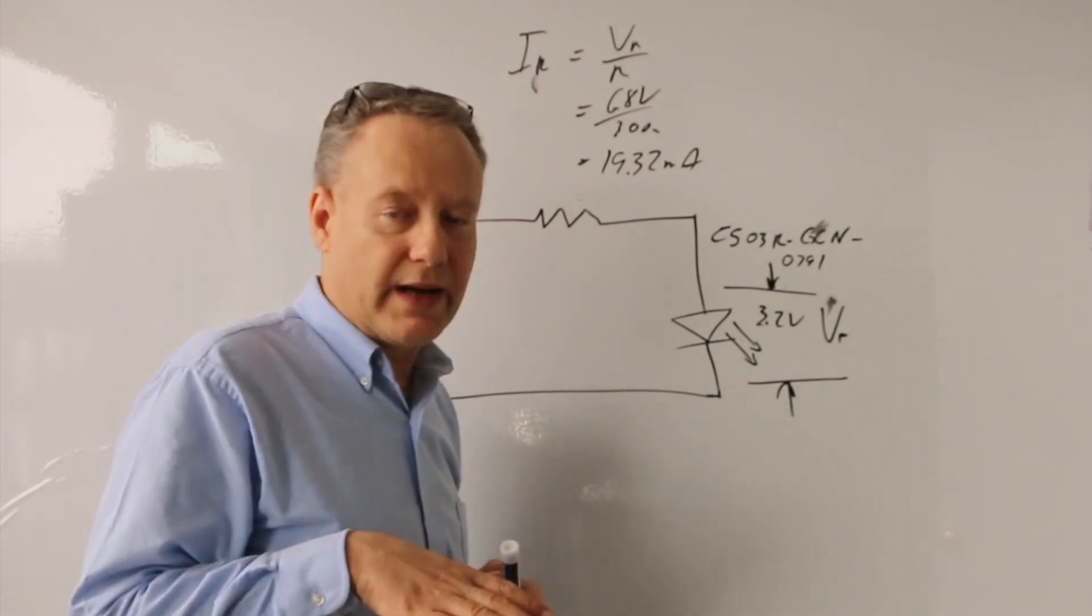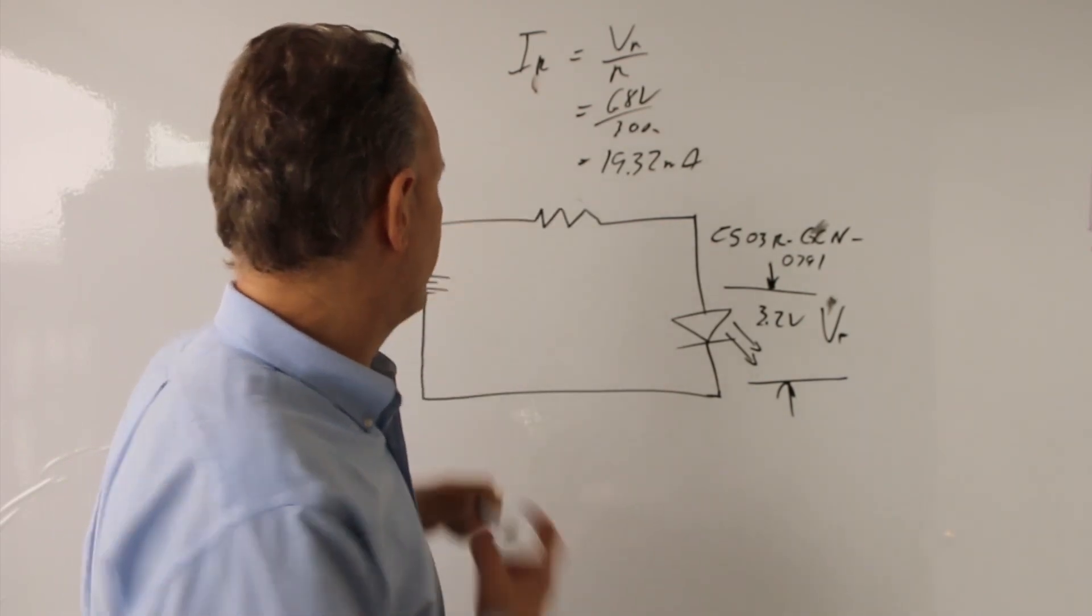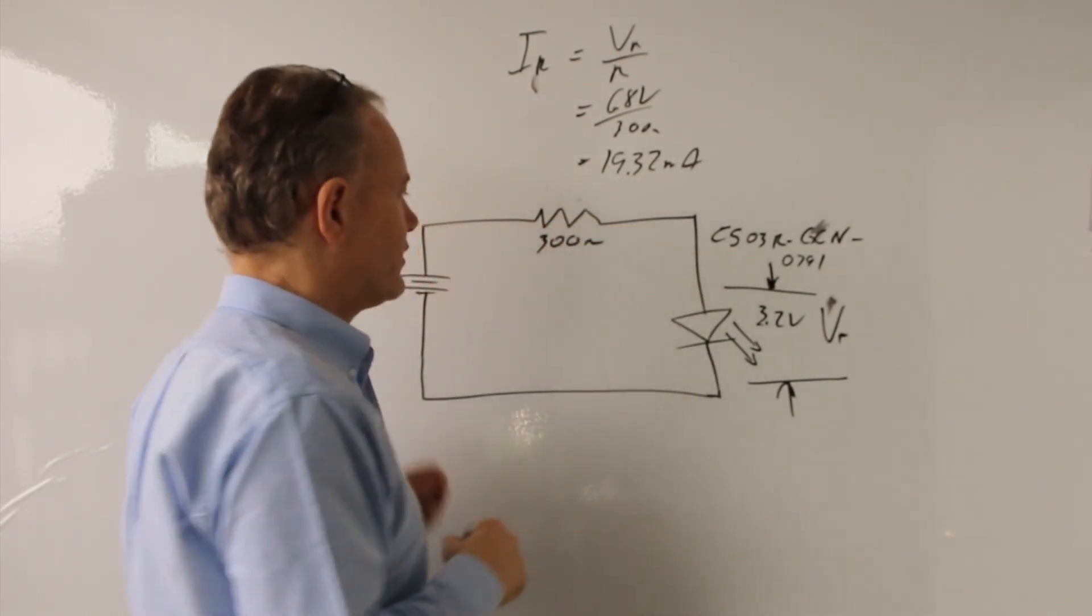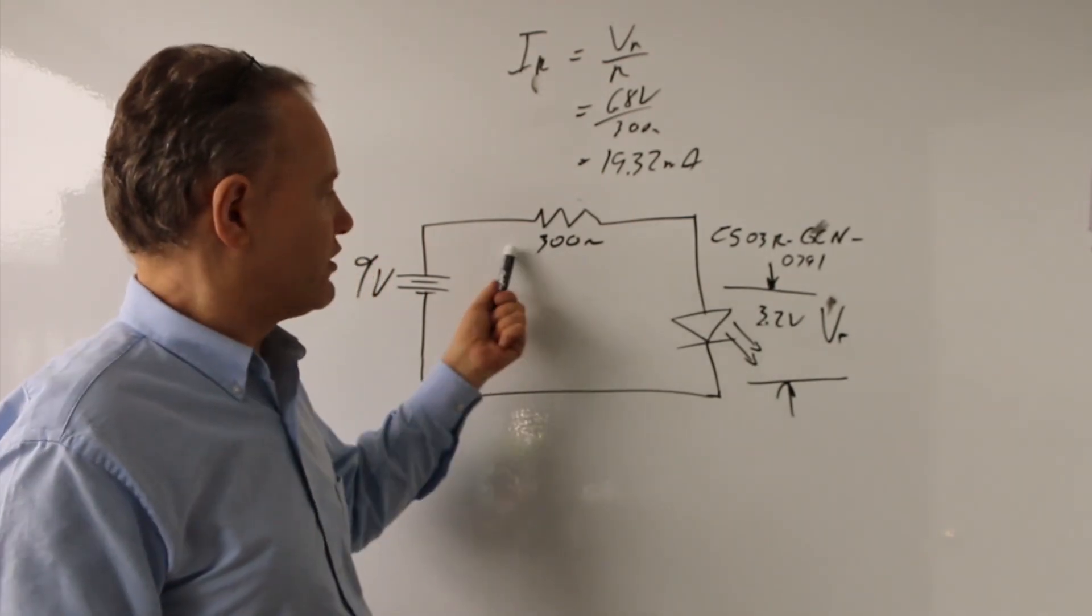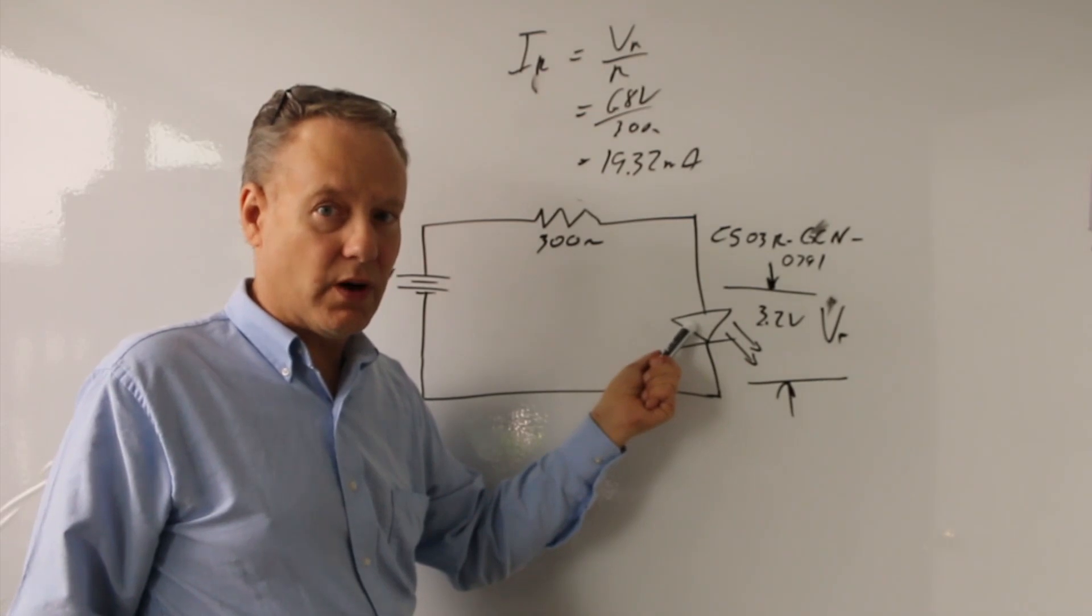And it's best to underrate them a little bit because they last longer. Okay, good. So we're going to use a 300 here. Good. So 300 ohms. Nice. So now I've chosen the correct resistor that's going to give me current that's below what this is rated for.